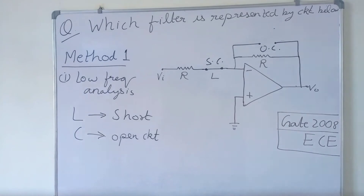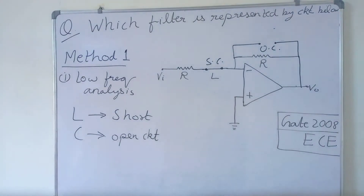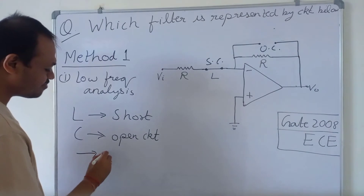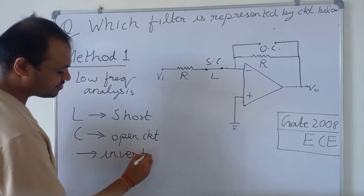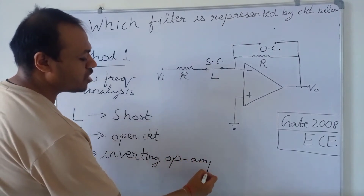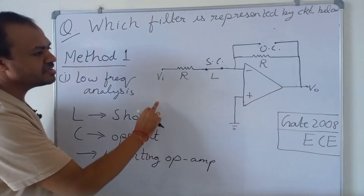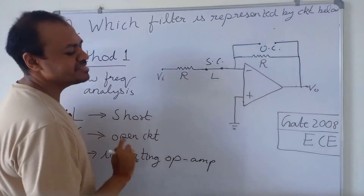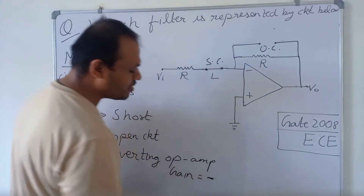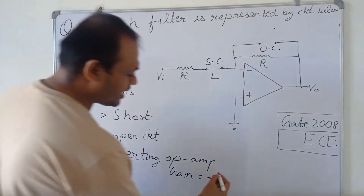This is now equivalent to a simple inverting op-amp — the basic configuration of an inverting op-amp. In an inverting op-amp, the gain is equal to minus this resistance upon this resistance. So gain is equal to minus R upon R.